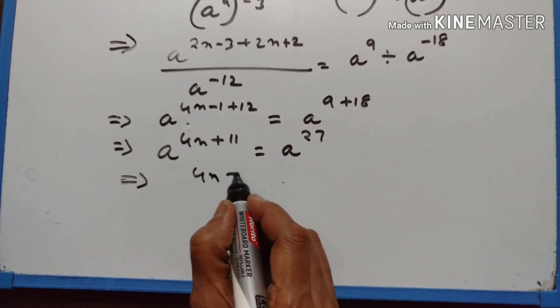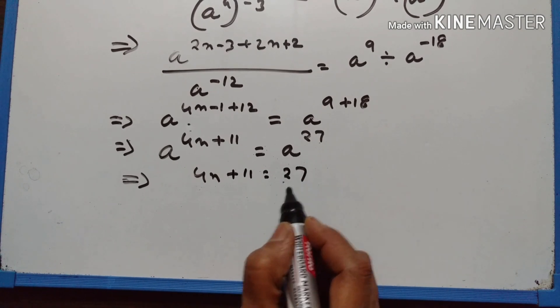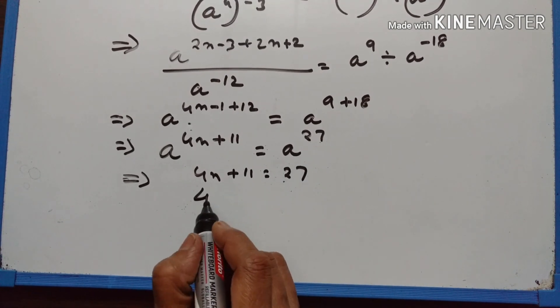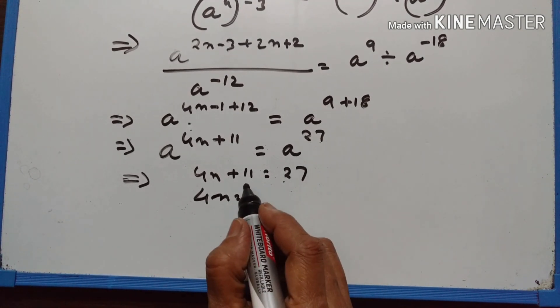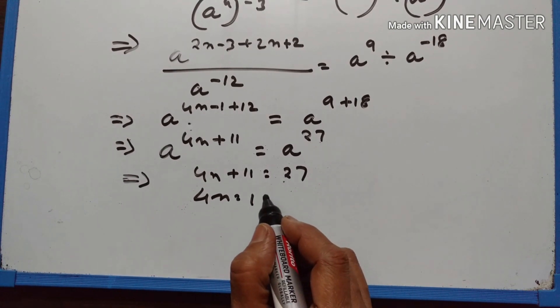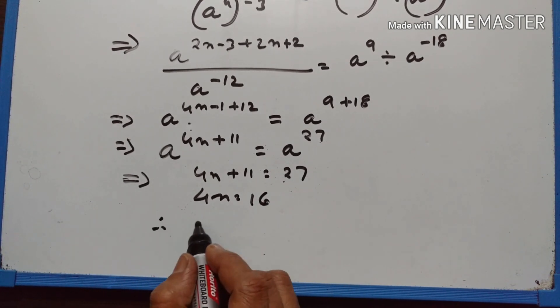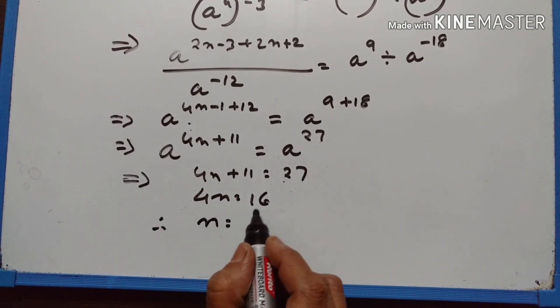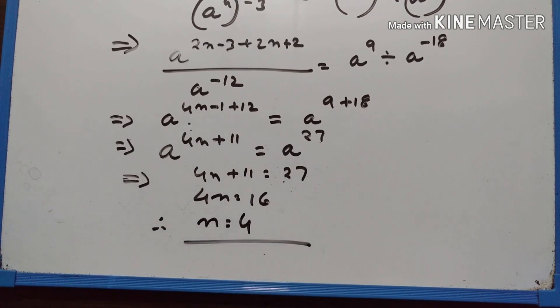4n plus 11 is equal to 27. 4n is equal to 27 minus 11, which is equal to 16. Therefore n is equal to 16 divided by 4, that is 4.